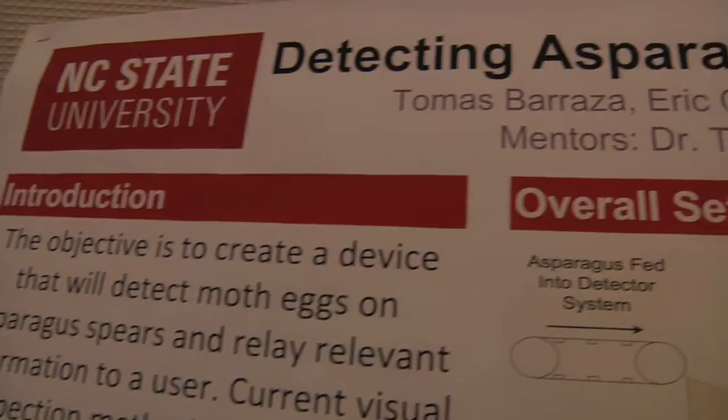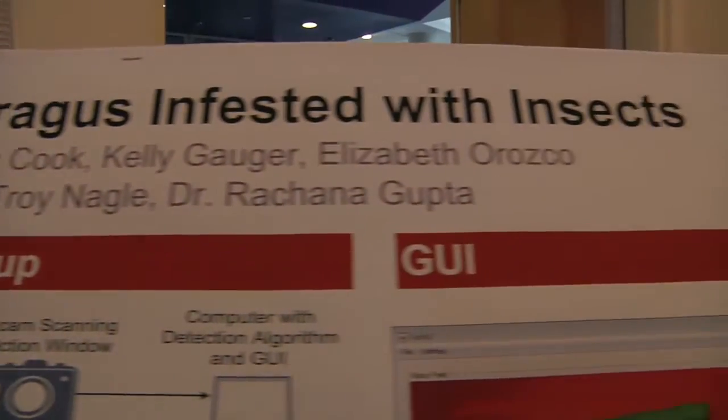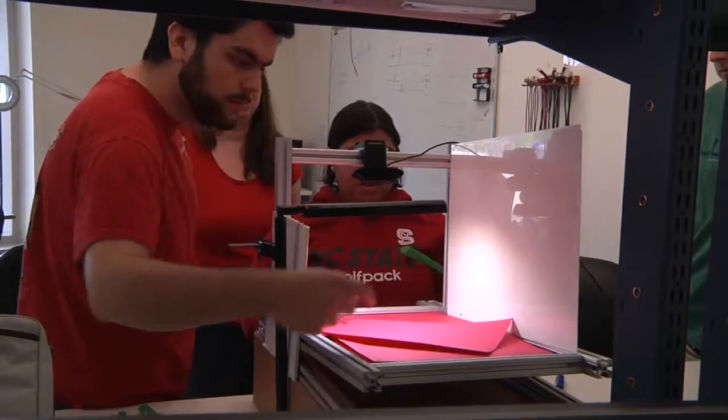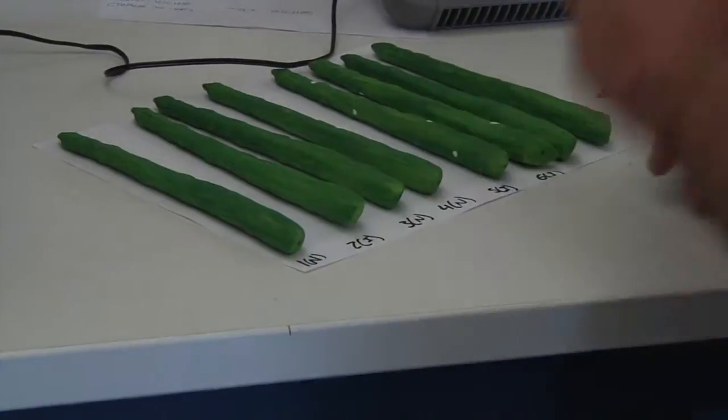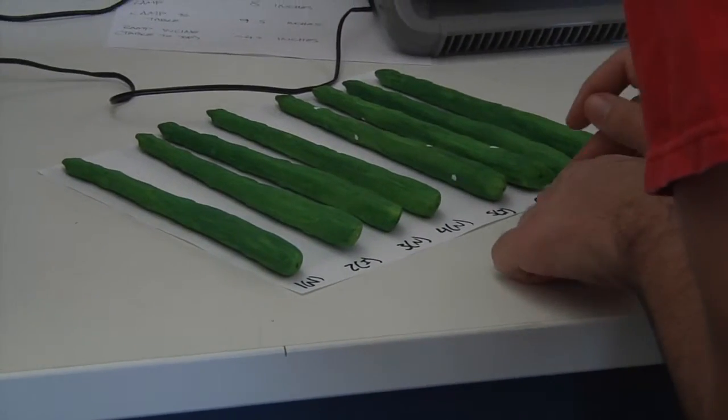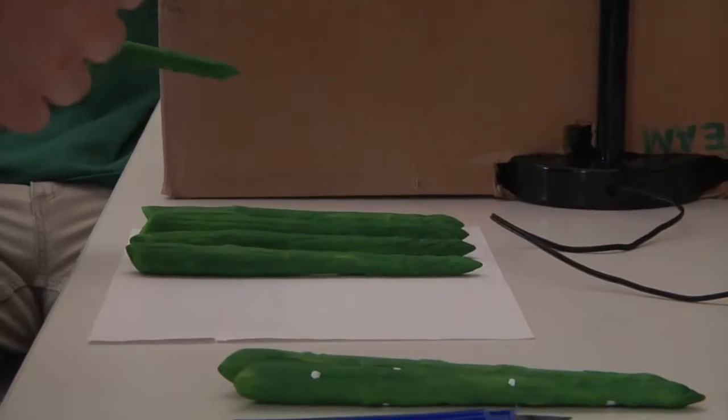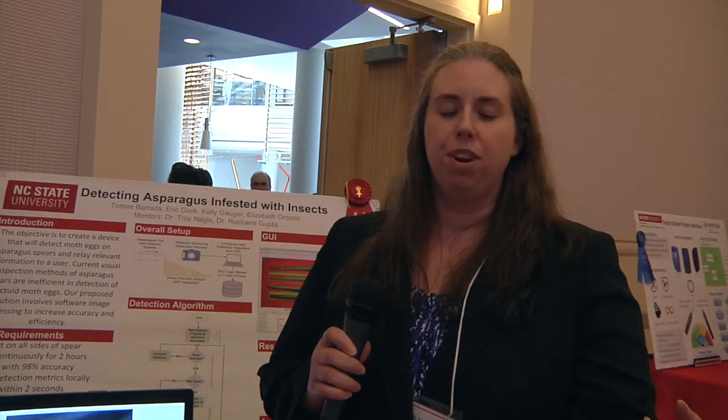We're team 28, detecting asparagus infested with moth eggs. I'm Kelly Gogger, this is Tomas Barraza, Eric Cook, and Elizabeth Orozco-Sanchez. In South America, there's a problem with a specific species of moth laying its eggs on the asparagus spears. We're trying to help minimize the amount of washing needed and the amount of pesticides used, because when the asparagus is imported into America, we want to make sure we're not using as many pesticides and we're sending clean asparagus.